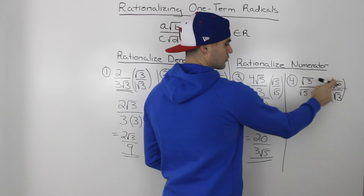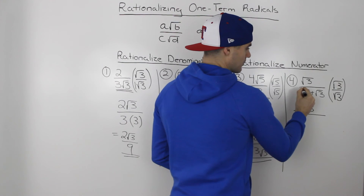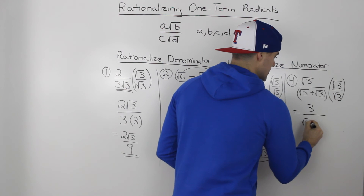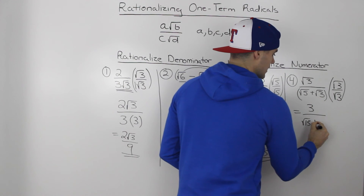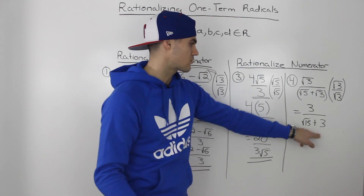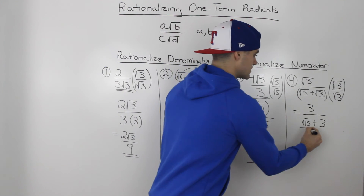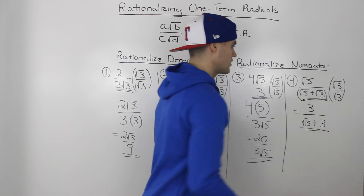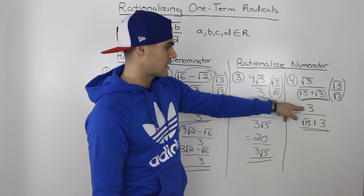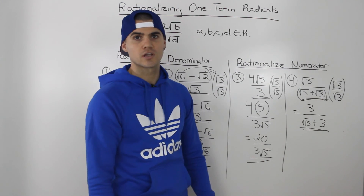We multiply by root 3 over root 3. The numerators: root 3 times root 3 just gives us 3. Then this root 3 in the denominator gets distributed into the bracket with root 5 plus root 3. Root 3 times root 5 gives us root 15, and root 3 times root 3 gives us 3. We can't simplify this anymore, so the final expression is 3 over root 15 plus 3 — notice how there's no radical in the numerator because we rationalized it.